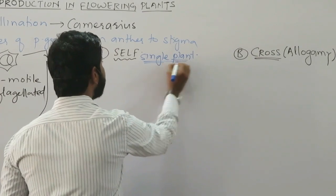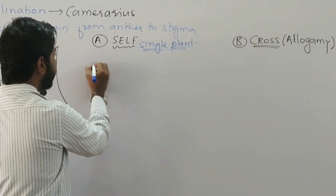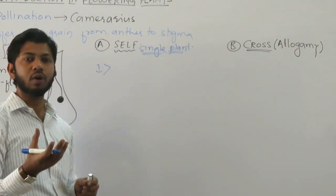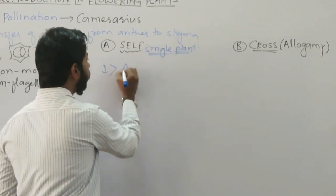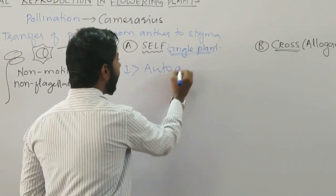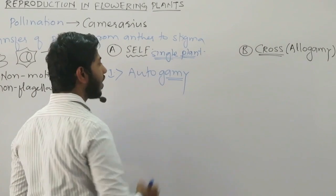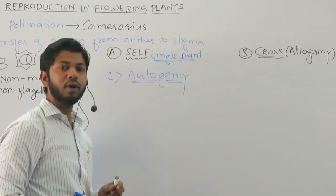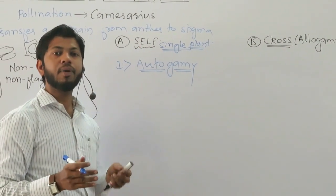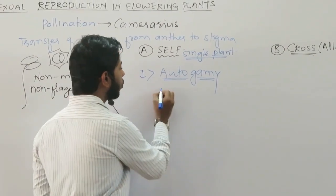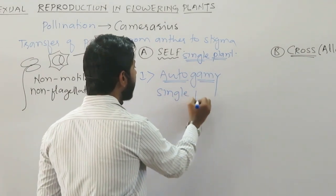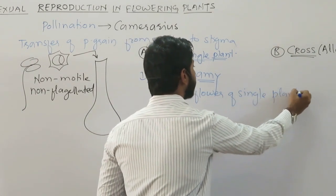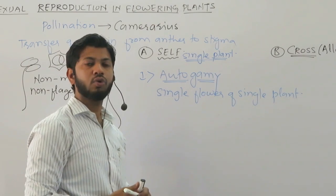Self-pollination, which involves a single plant body, is again classified into two types. The first type, in which pollination occurs within a single flower of a plant, is known as autogamy. 'Auto' means self, and 'gamy' is derived from the Greek word 'gamos' meaning marriage. So autogamy is pollination that takes place not only on a single plant but also within a single flower.